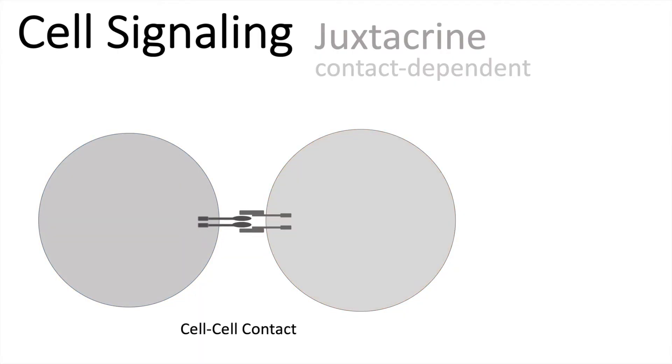A very famous example for juxtacrine signaling is the Notch-Delta pathway. So two adjacent cells, where one has expressed the delta molecule, which is the membrane-bound ligand, and the other cell has expressed the Notch receptors. Notch-Delta signaling is involved in embryogenesis. It is very important for cell differentiation and can easily determine cell fate dependent on which one of these parts, the receptor or the ligand, is expressed.